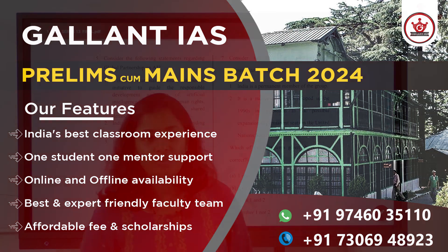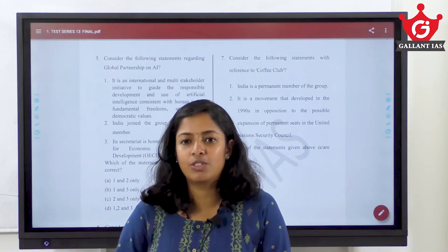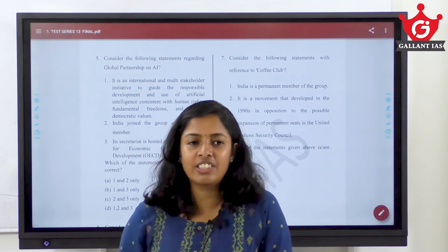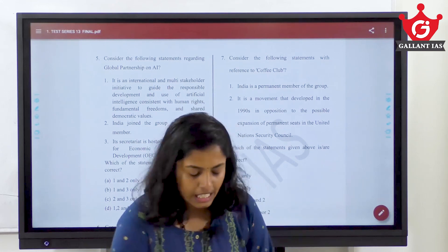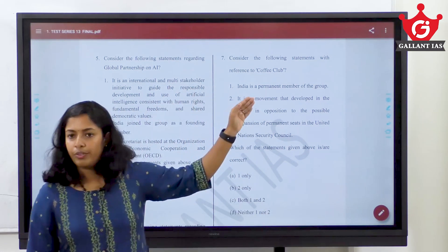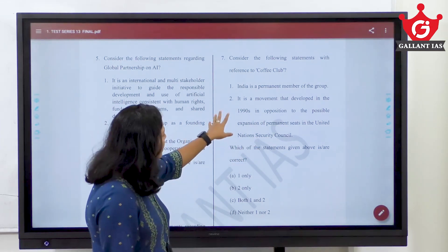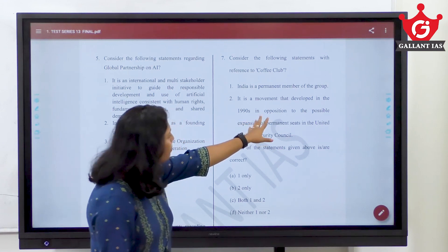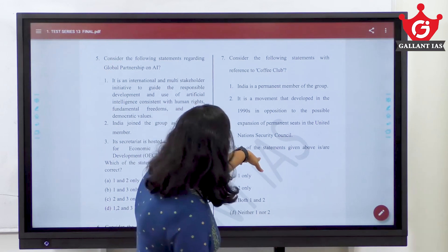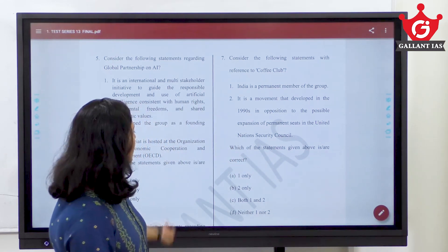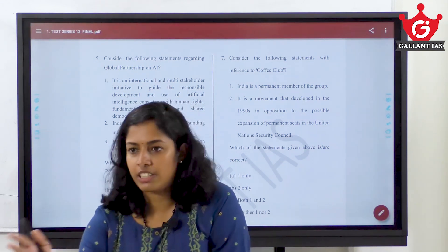Next question — Coffee Club. Another factual thing. United Nations — everything is important about the UN, especially when it comes to India in that scenario. If you know the Coffee Club, this is a very easy question. Otherwise, just read the first statement: India is a permanent member of the group. It's a movement that developed in the 1990s in opposition to the possible expansion of permanent seats in the UNSC.